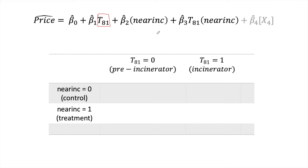Finally, we include an interaction term — we simply multiply the time dummy and the treatment dummy together. There's also an additional term shown in light gray (beta 4 and x4) for other control variables, such as house size, that also affect price. These controls are important to include but are not the crux of the difference-in-differences model itself.